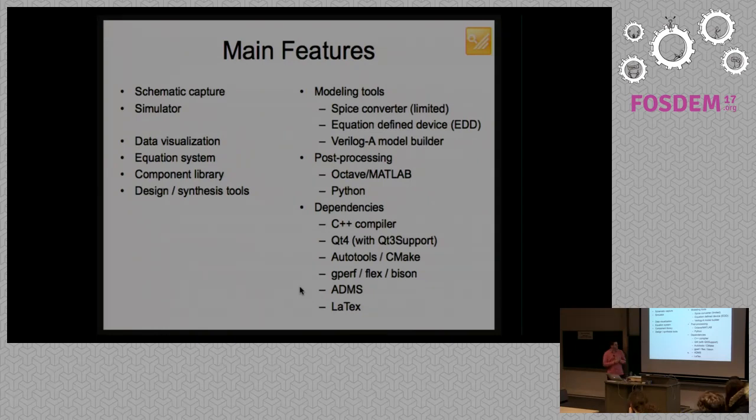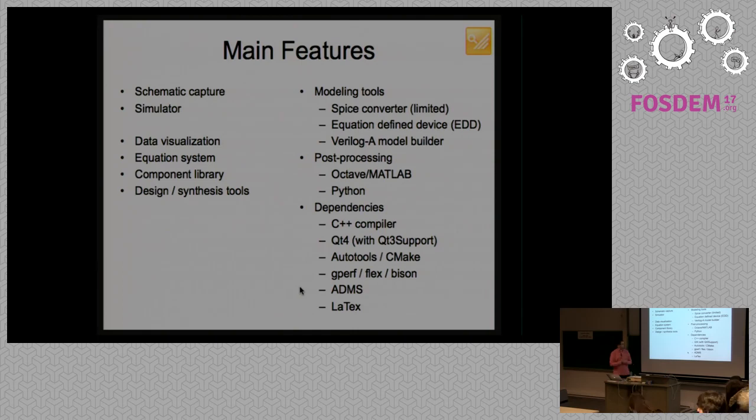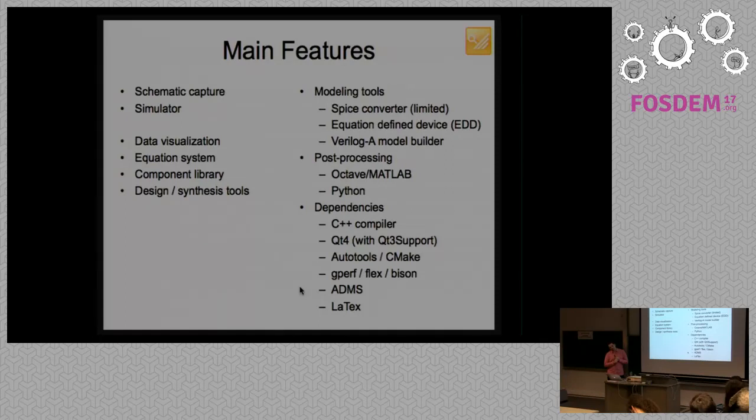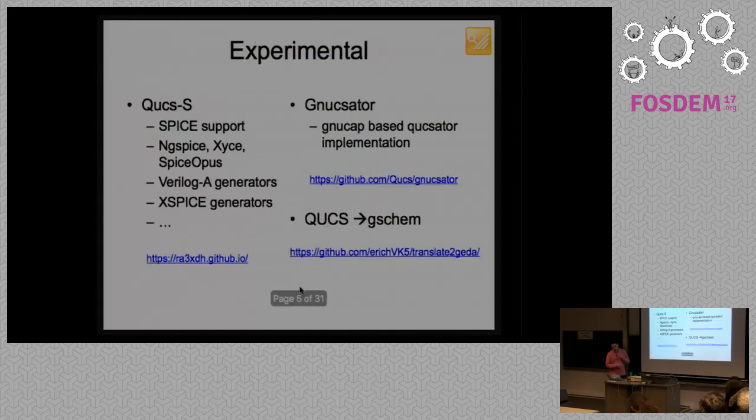And the dependencies that we have: it's C++, Qt 4. We're still struggling to remove Qt 3 from the source, but we are working on that. It deals with AutoTools and CMake. And JuPur for the simulator and the parsers are also written in Flex Bison. We depend on ADMS for the Verilog A part. And the documentation, most of it is written in LaTeX.